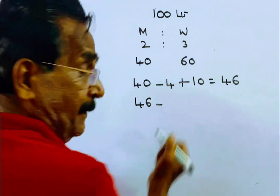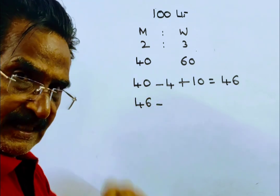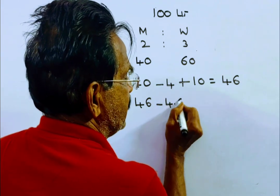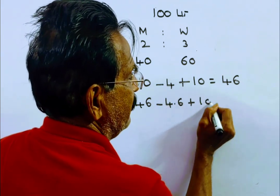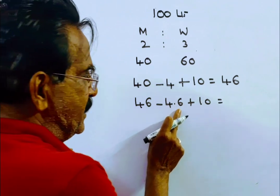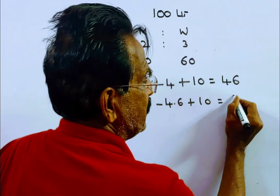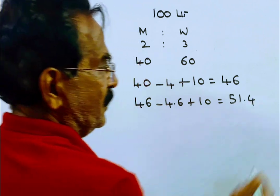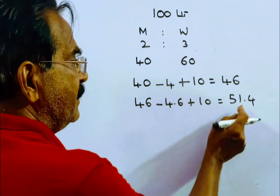Second operation: 10% of the milk is drawn. 10% of 46 is 4.6. Plus 10 liters of milk is added. So 46 minus 4.6 is 41.4, plus 10 is 51.4. This is the quantity of the milk after the second operation.